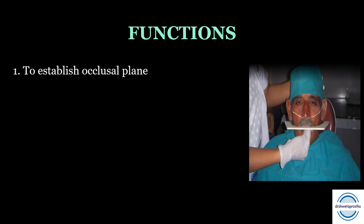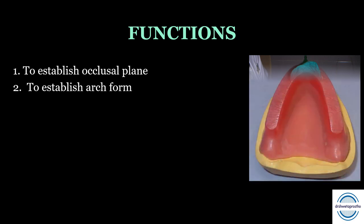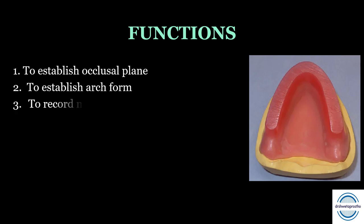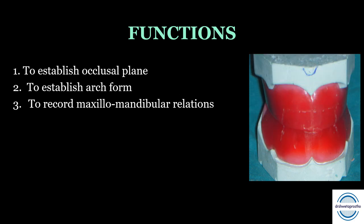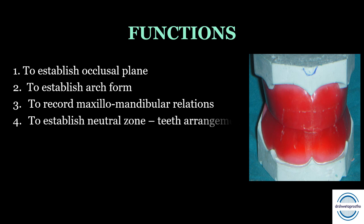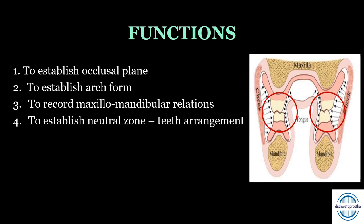The functions of occlusal rims: first, to establish the level of the occlusal plane in a completely edentulous patient; second, to establish the arch form of the patient; third, to record the maxillomandibular jaw relations, which can only be done with the help of occlusal rims; and last, to establish the neutral zone — the space for the denture where forces from the tongue are neutralized by forces from the lips and cheeks — for teeth arrangement.